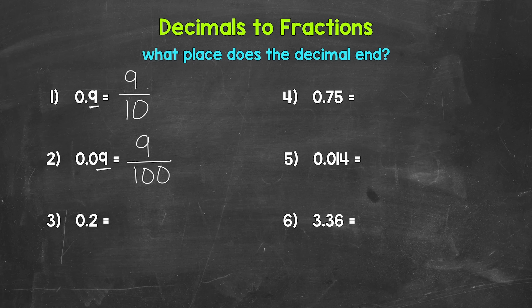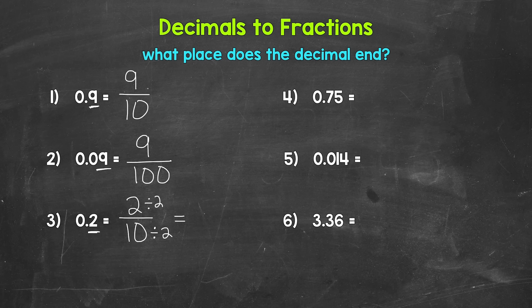Moving on to number three, we have 0.2, two tenths. Two is going to be our numerator, and this decimal ends in the tenths place, so 10 is going to be our denominator. So 2 over 10, two tenths. Now this fraction is correct, but we can simplify here. We have a greatest common factor of 2. 2 divided by 2 is 1, and 10 divided by 2 is 5. So we get 1 over 5, one fifth — that's in simplest form.